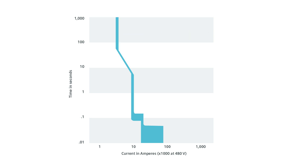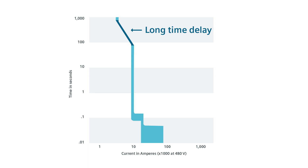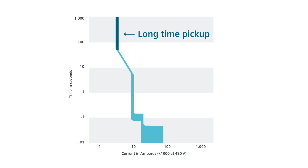A long time overload can remain for some time without damaging the equipment, so the long time function has a setting called long time delay. The long time delay is a diagonal portion of the curve which represents the maximum total clearing time including breaker opening and arcing time, whereas the lower edge of the curve is the resettable time — the maximum time that an overload can persist without tripping the circuit breaker. Also notice as the current increases on the scale beyond the long time pickup, the long time delay decreases without changing any settings. If more overload time is needed, simply adjusting the long time delay will add more resettable time. So this curve is showing us that a load current near the pickup setting will trip in approximately 50 seconds. Now let's see how that works using our demo.